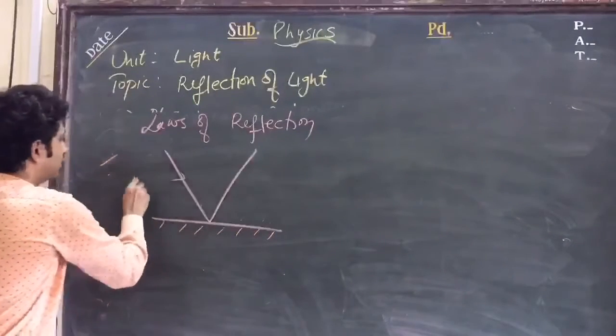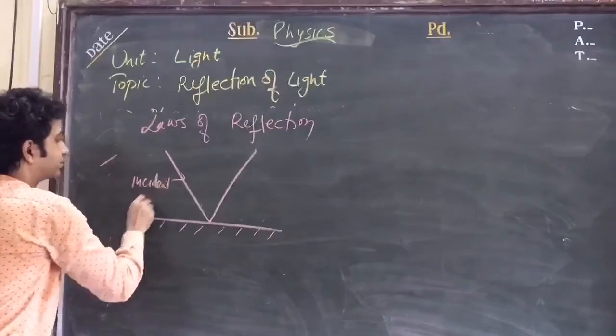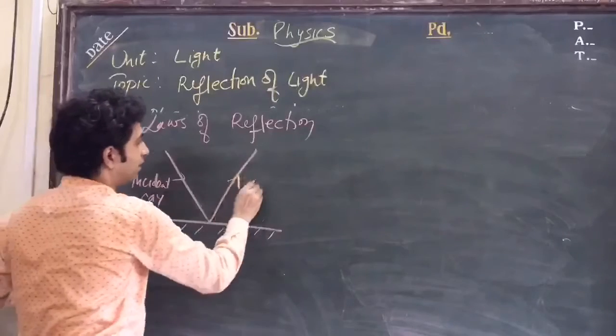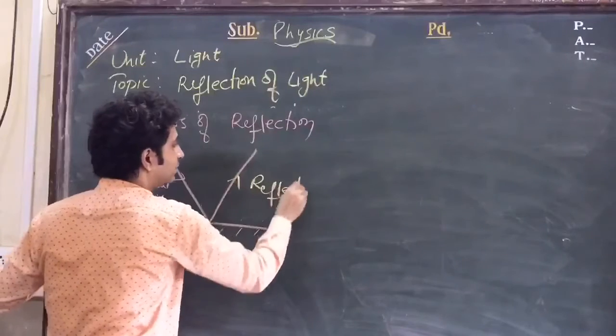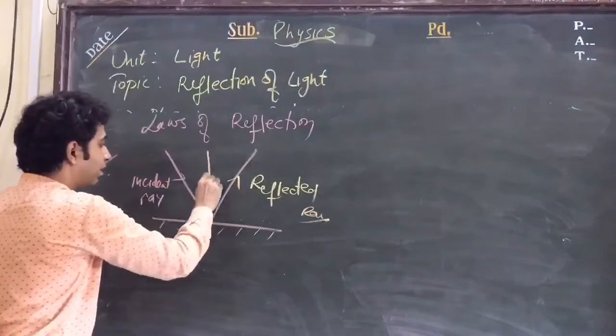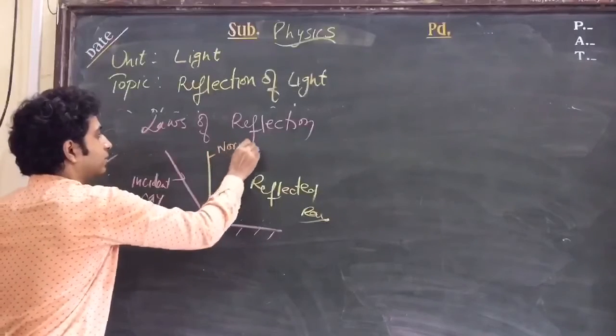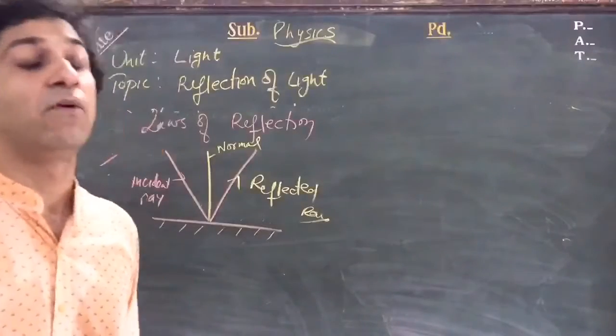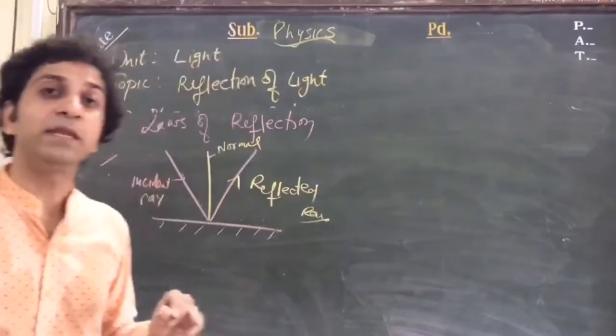This is an incident ray, this is a reflected ray, this is a mirror, and I'm drawing the normal. Normal is perpendicular or a reference line with respect to which angles are being measured.